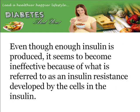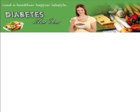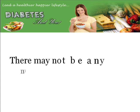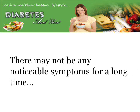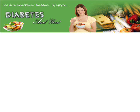Even though enough insulin is often being produced, it seems to become ineffective because of what is referred to as an insulin resistance developed by the cells to the insulin. Oftentimes, someone with type 2 diabetes may not even know that he or she has it. There may not be any noticeable symptoms for a long time.